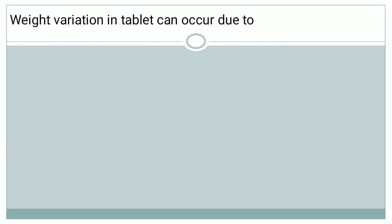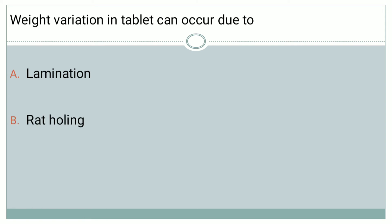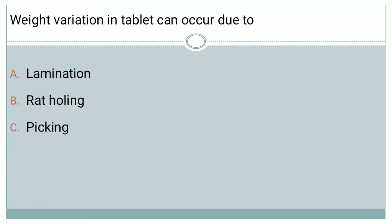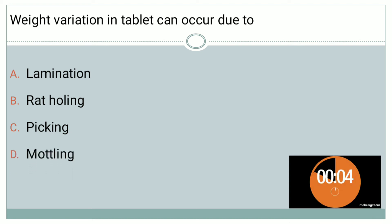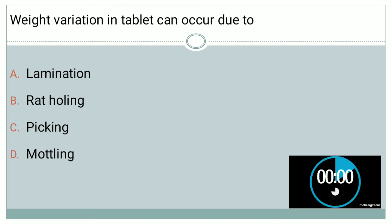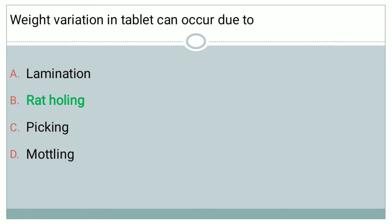The next question is: weight variation in a tablet can occur due to — options are: A — lamination, B — rat-hulling, C — picking, and D — mottling. The correct answer is rat-hulling.